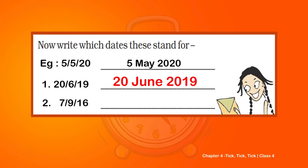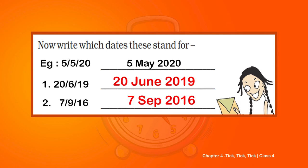Question number 2 is 7-9-16. Which is the ninth month? You are right - it is September. So it can be written as 7 September 2016.